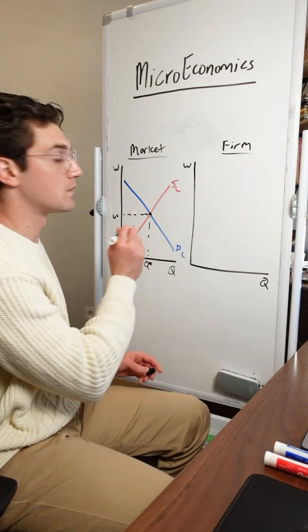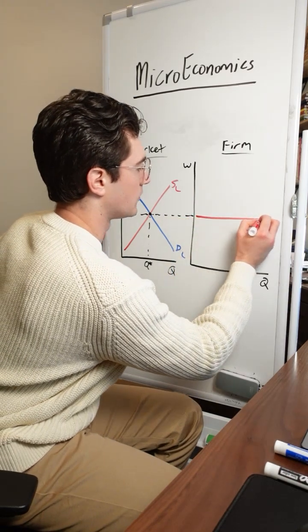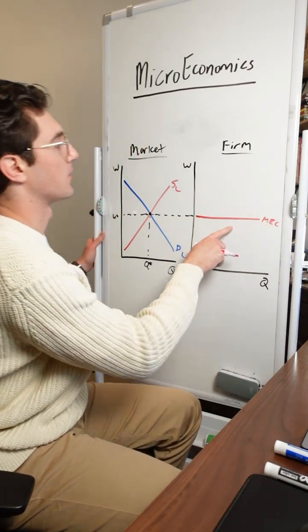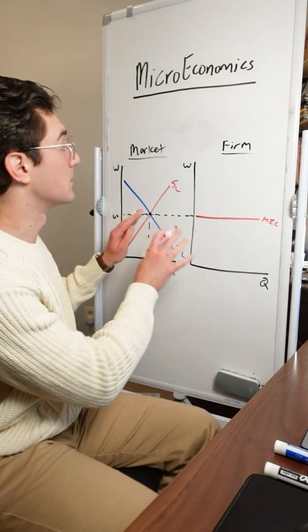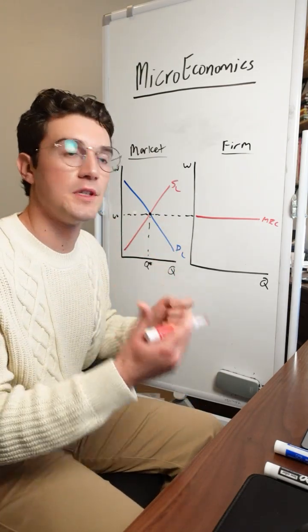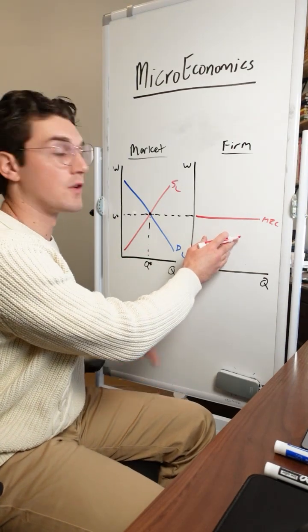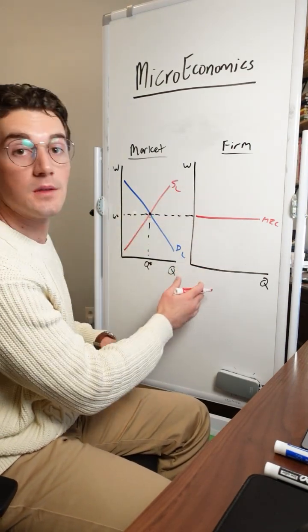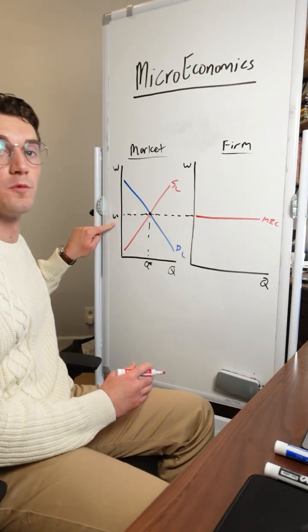Now, what's critical that you do from here is that you continue this line over as the horizontal marginal resource cost line for the individual firm. The reason being for introductory microeconomics labor market problems, the assumption is that the labor market is perfectly competitive. In other words, individual firms can't adjust their wage to hire more or less workers. You've just got to accept whatever the equilibrium wage is set at.